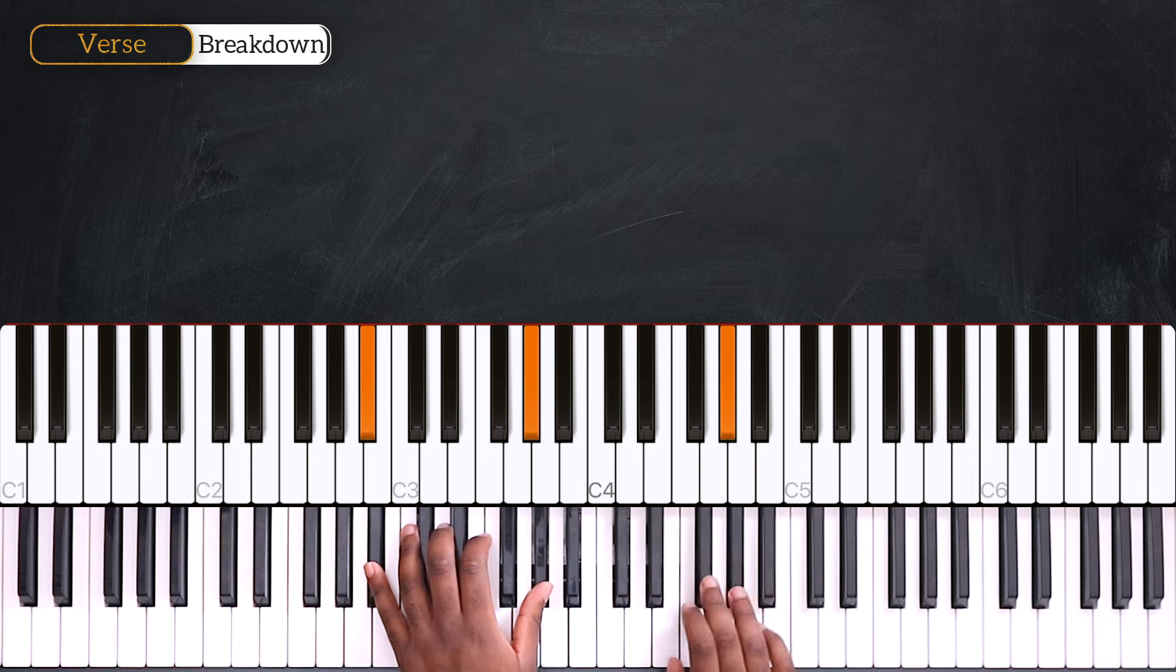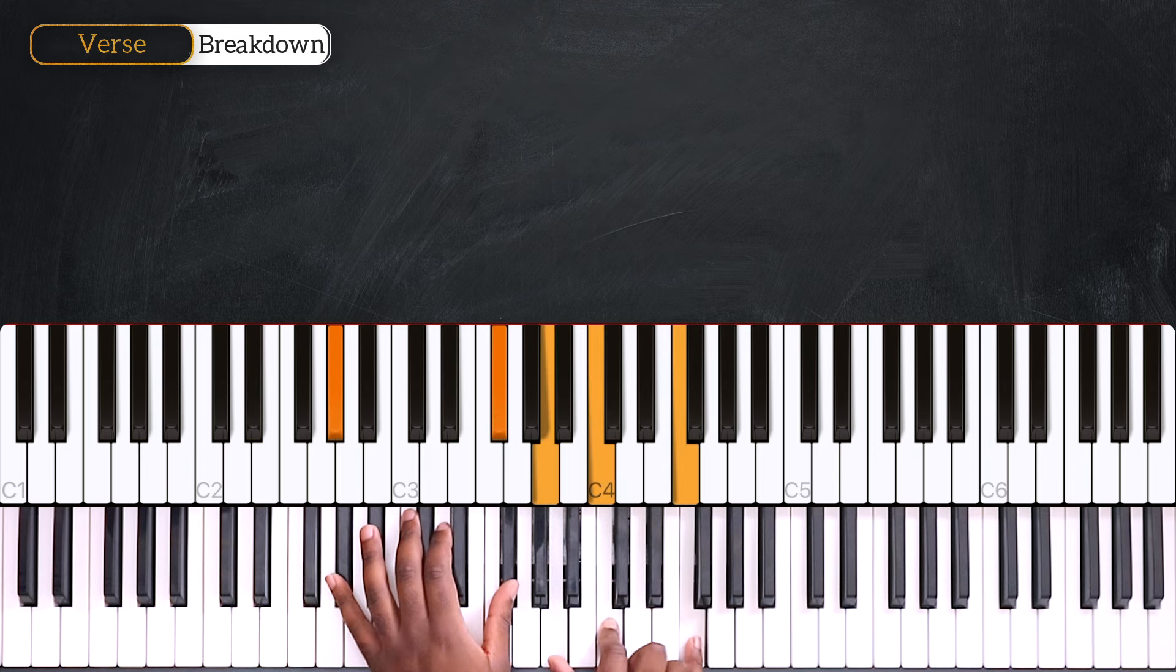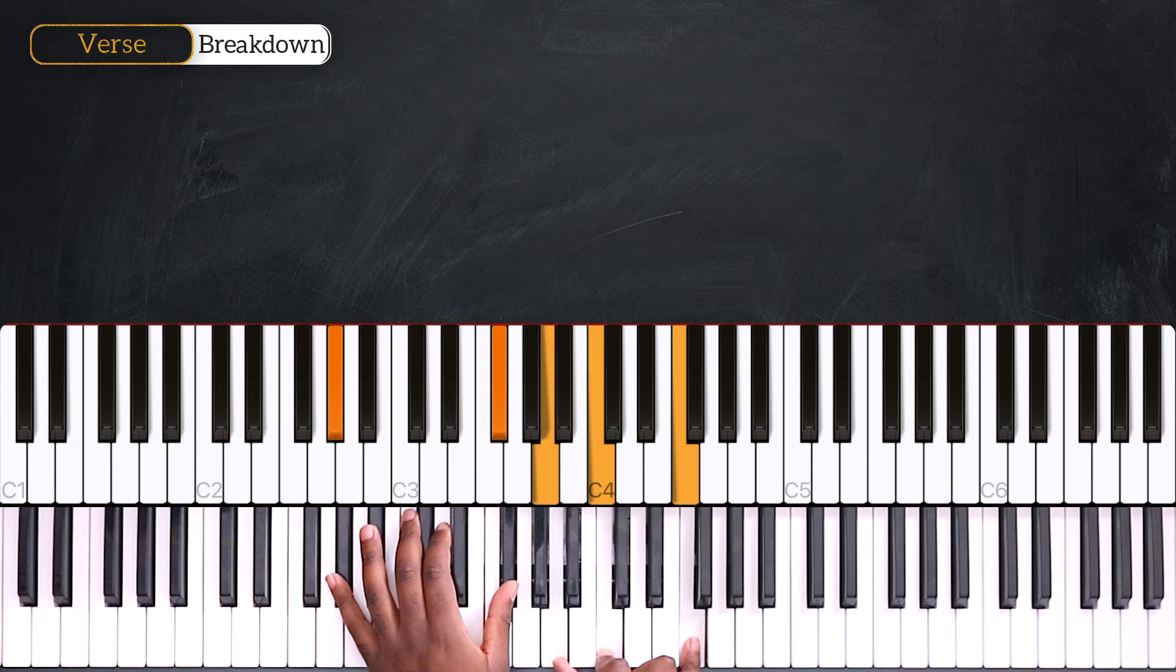Then Ab, Gb, landing on Eb minor 9. Going up a fourth. On Ab7, Eb9, Eb13. So, playing A, C, and F, right hand. And then play Eb, so the fifth.